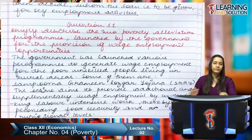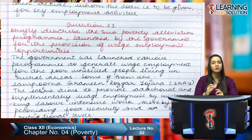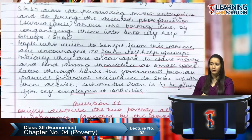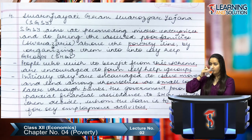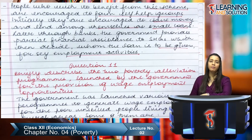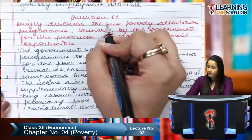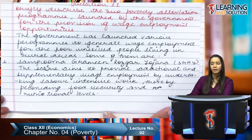So those are the four self-employment programs: first, Rural Employment Generation Program; second, Prime Minister Rozgar Yojana; third, Swarna Jayanti Shahari Rozgar Yojana; fourth, Swarna Jayanti Gram Swarozgar Yojana. Now we will talk about wage employment programs. The government launched various programs for the generation of employment for poor, unskilled people living in rural areas.